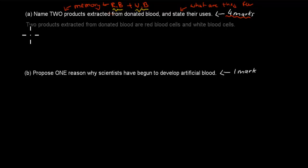So two products extracted from donated blood are red blood cells and white blood cells. Those would probably be the easiest two marks. Again, you get one sentence, you get two marks for that. This is for naming red blood cells and white blood cells. There's two marks, really. And then you have to state their use.